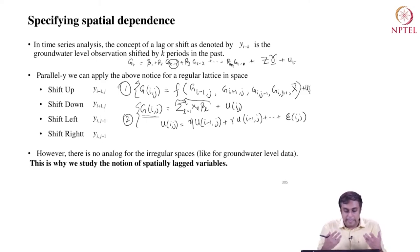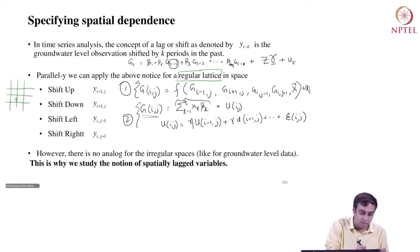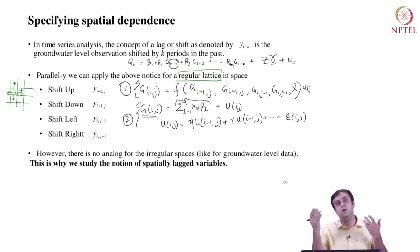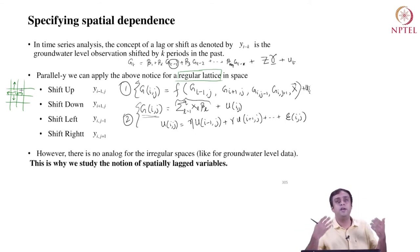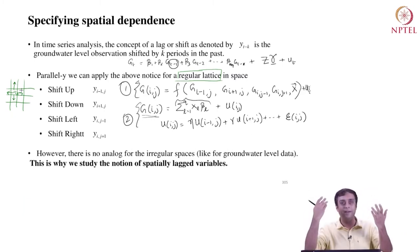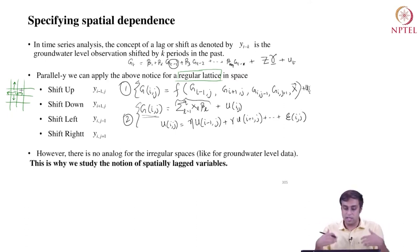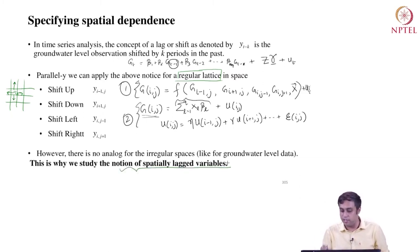However, this type of specification depends on what is called a regular lattice — data distributed spatially so that at any point (i,j) one can shift up, down, left, and right and find exactly one observation in each direction. Real-world datasets don't work like that — they are irregular lattices. For example, at the northward boundary of Uttar Pradesh data, there is no scope for shifting up. That is why we specifically study the notion of spatially lagged variables, where the weights matrix and related concepts arise.